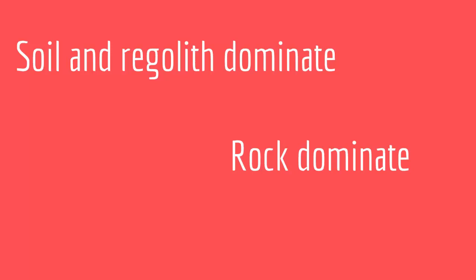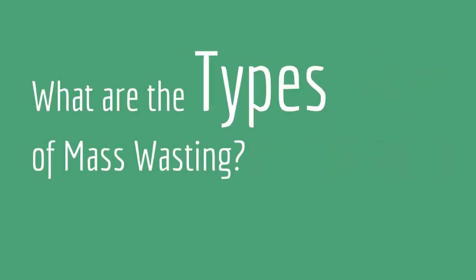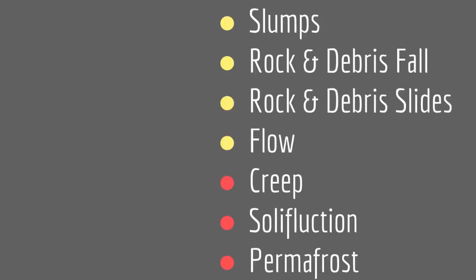So let's see how many types of mass wasting we have. Well, we have several types: slumps, rock and debris falls, rock and debris slides, flows, creeps, solifluxion, and permafrost.